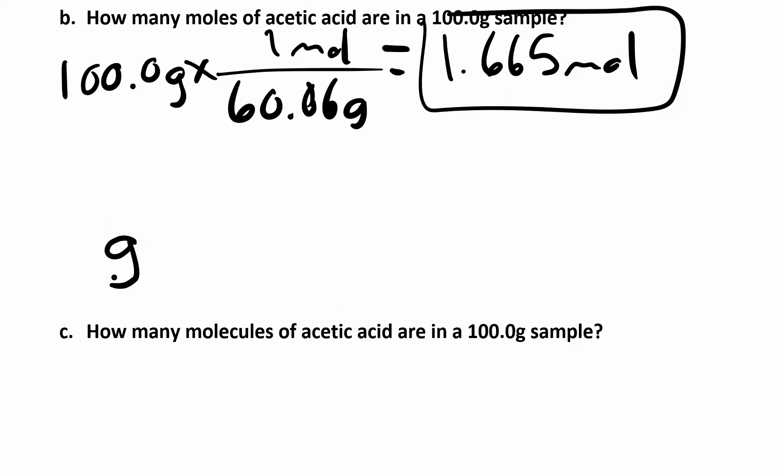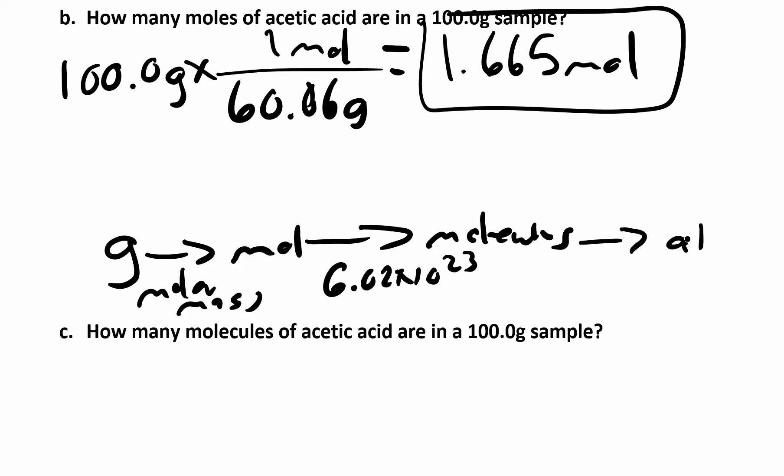we just went from grams to moles using molar mass, and now we're going to go from moles to molecules using Avogadro's number. There are 6.02 times 10 to the 23 molecules for every one mole. In the next step, we'll find atoms using the chemical formula.